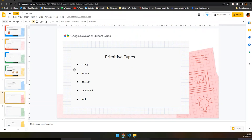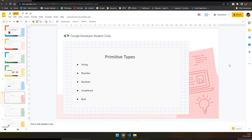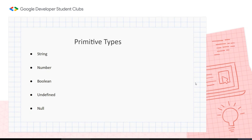Next, let's look at primitive types. There are five: String — any words like 'john' or 'mike'; Number — unlike other languages, JavaScript represents integers and floating-point values all as the type 'number'; Boolean — true or false; Undefined; and Null — where you've created a variable but don't want to assign anything to it yet.